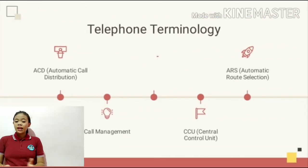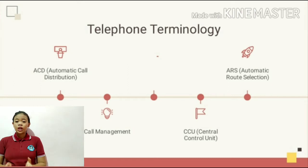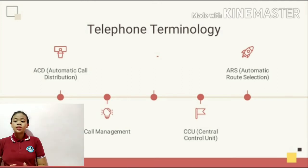The first telephone terminology is ACD, Automatic Call Distribution. Each system provides facilities for monitoring the agents' performance and the performance of the call center as a whole. The next is ARS, or Automatic Route Selection.